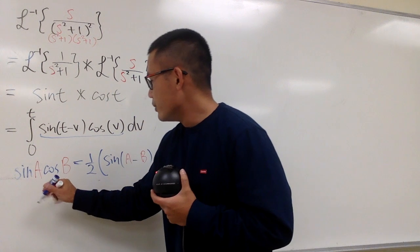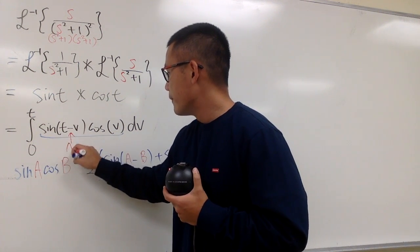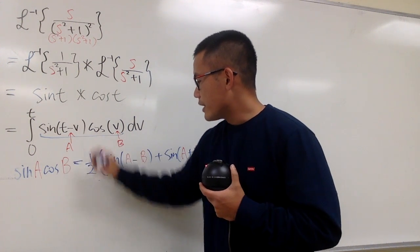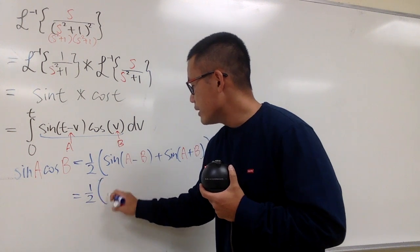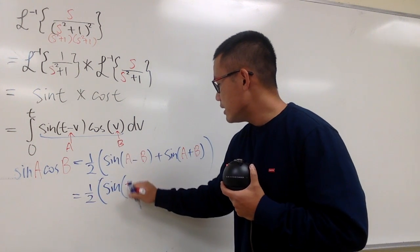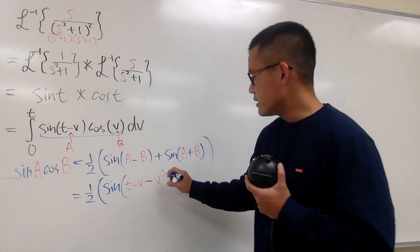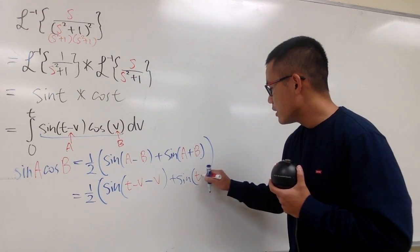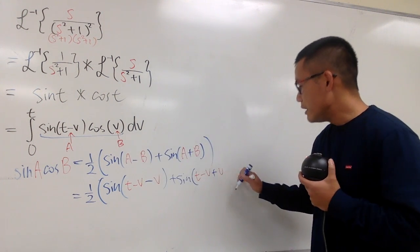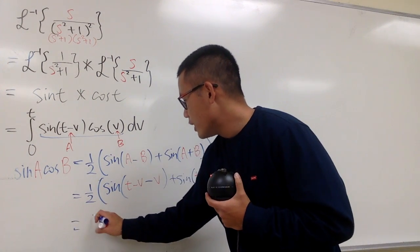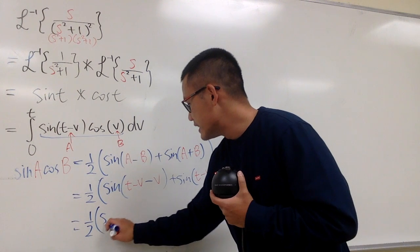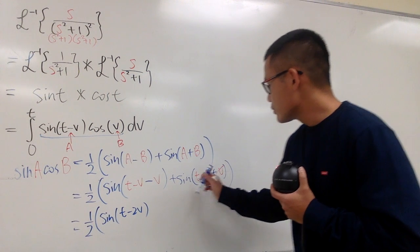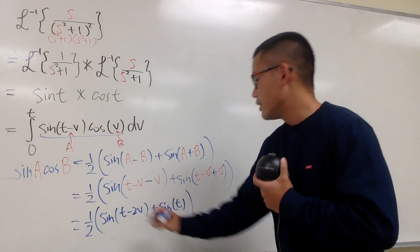In this case, a is t − v and b is just v. So this in blue is going to be 1/2 times (sine of (t − v) minus v plus sine of (t − v) plus v). Simplifying: we have 1/2, then sine(t − 2v), and then the v's cancel, so we have plus sine t.